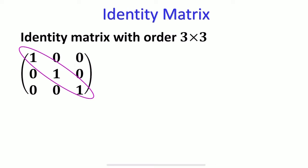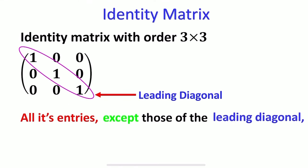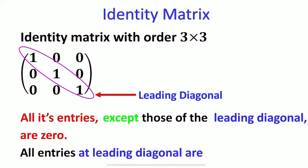Where this is known as the leading diagonal. All its entries, except those of the leading diagonal, are 0. All entries at the leading diagonal are 1.